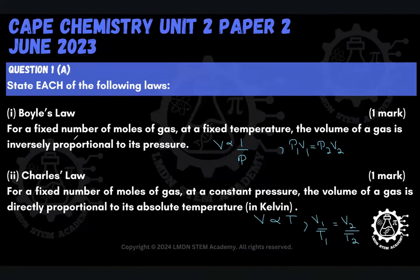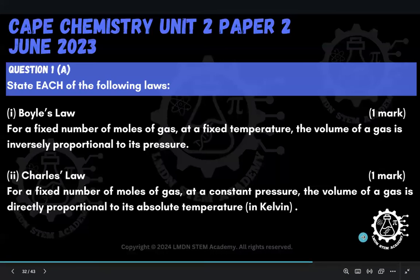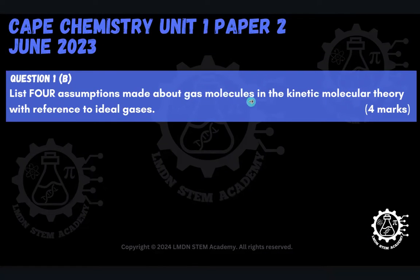Moving right along, we've stated our two laws, Boyle's Law and Charles' Law. The next question asks us to list four assumptions made about gas molecules in the kinetic molecular theory with reference to ideal gases.